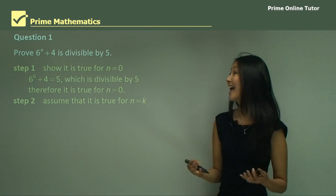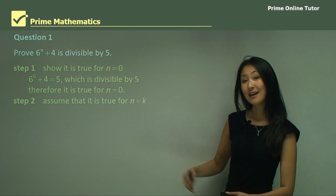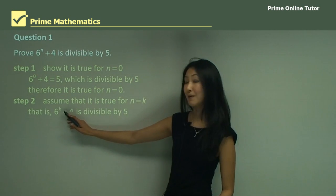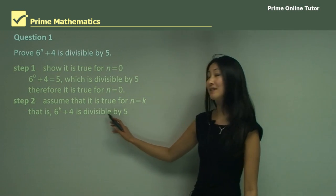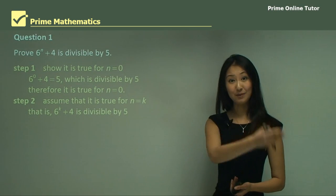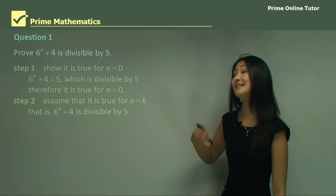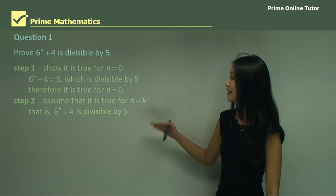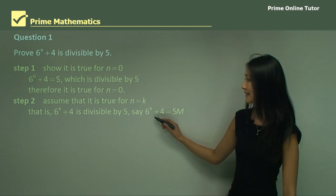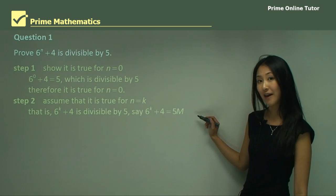Moving on to step two, this is where we make our assumption. We want to assume that this is true for n equals k. So how we write that is: six to the power of k plus four is divisible by five. So instead of writing an equals sign, which is what we did with equations, we just write 'is divisible by five' because that's what we're trying to prove.